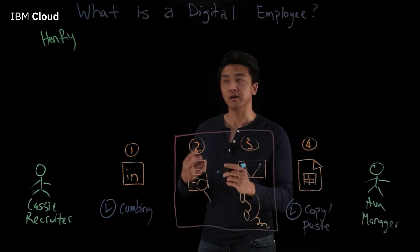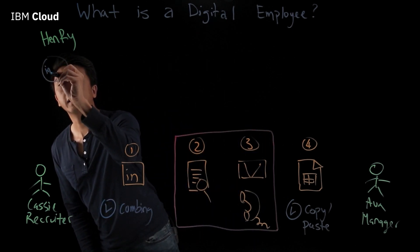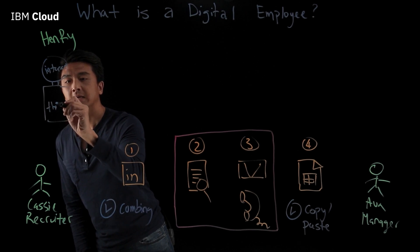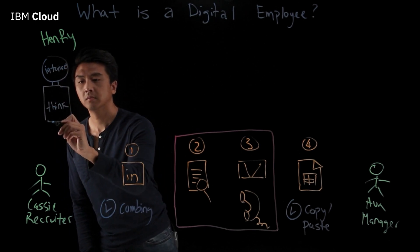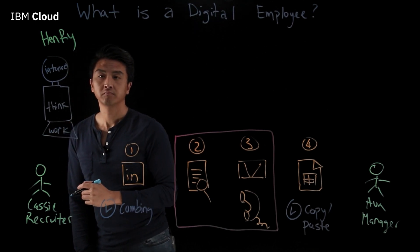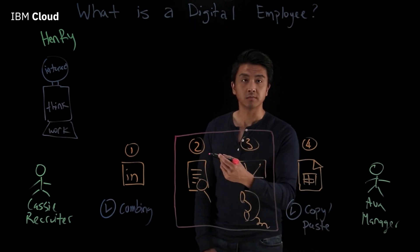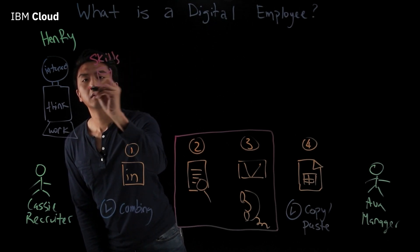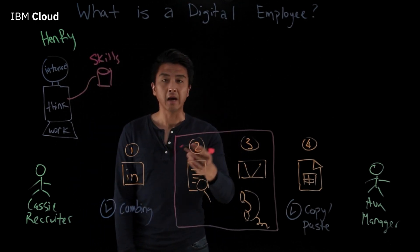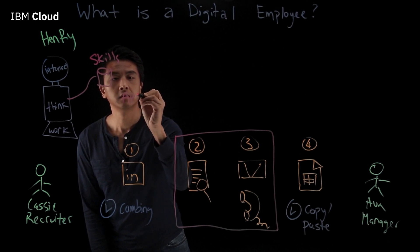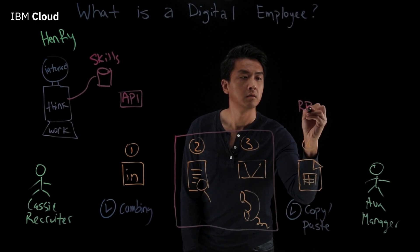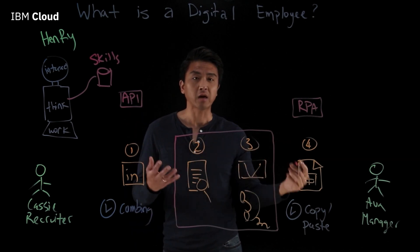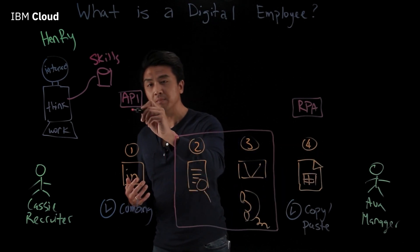Digital employees have three main functions. First, it can interact with the world around it — it can interact with Cassie. Second, it has AI and can interpret what it's being asked to do. And finally, it can do work. Just like human employees, digital employees have a set of job skills. For digital employees, these are essentially API calls and software robotics. These skills help the digital employee interact with systems such as LinkedIn and spreadsheets on behalf of Cassie.